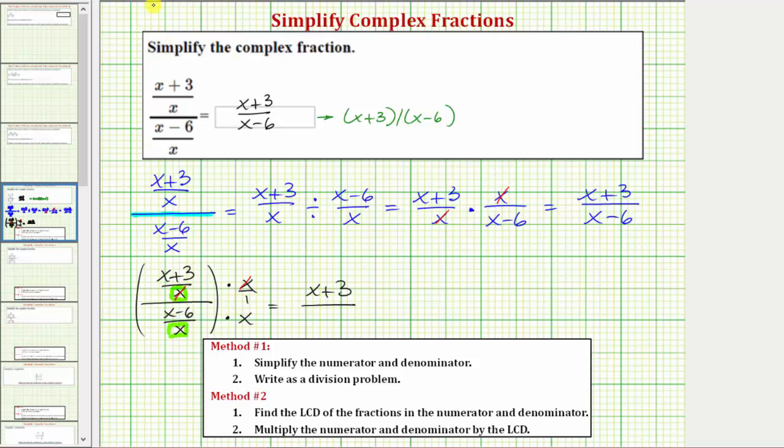Now multiplying on the bottom, the same thing happens. We can think of this x as x over one. We have a common factor of x between the numerator and denominator which once again simplifies to one. Therefore the product is just a factor of x minus six.